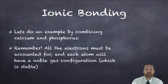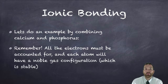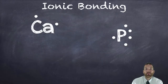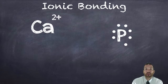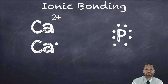Let's do an example combining calcium and phosphorus. Remember: all electrons must be accounted for and each atom must achieve a noble gas configuration, or the bond won't be stable. Calcium has two valence electrons and phosphorus has five. Calcium is a metal, so it loses its valence electrons to phosphorus. By losing two electrons, calcium achieves a noble gas configuration and a two plus charge. However, phosphorus still doesn't have a complete octet — it won't work in a one-to-one ratio. Bringing in another calcium and transferring one valence electron gives phosphorus three electrons total, a three minus charge, and a stable noble gas configuration.